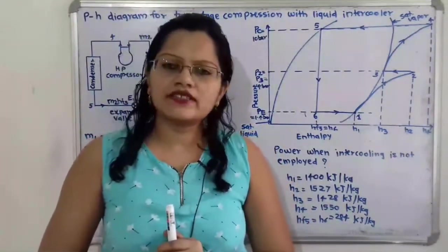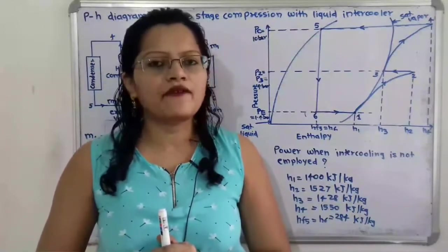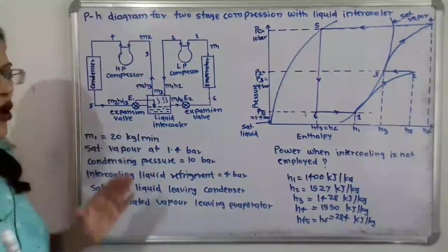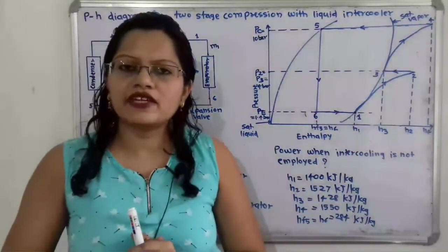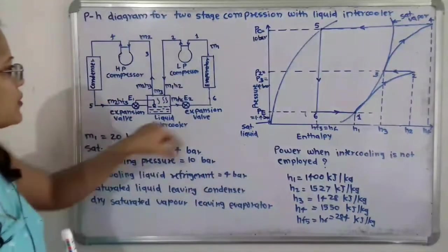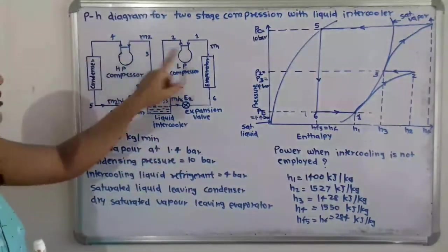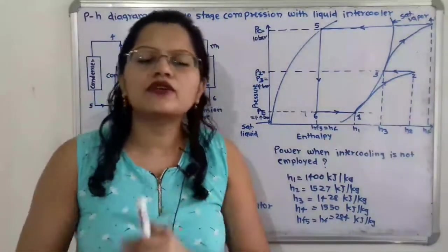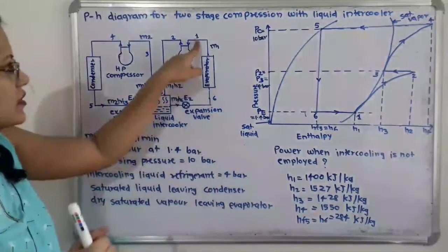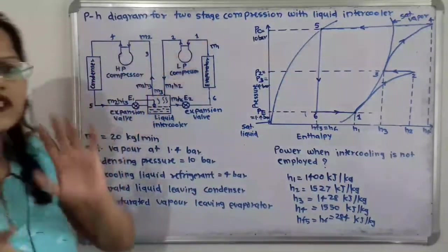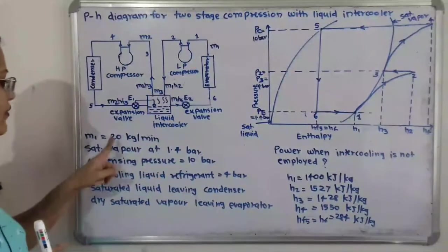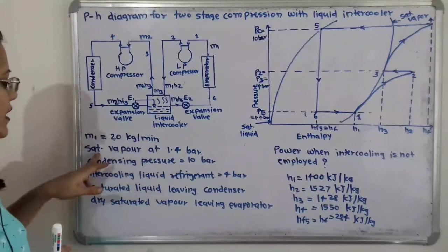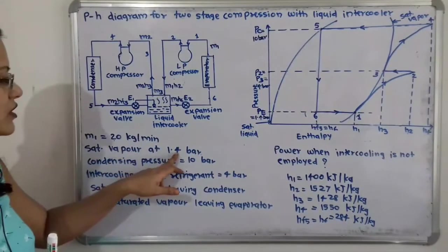Let us first understand the given data and what factors we have to find. If we observe the diagram, there is a low pressure compressor and a high pressure compressor. When the refrigerant is entering the low pressure compressor, that is point 1, the mass m1 is equal to 20 kilograms per minute. At point 1, the refrigerant is at saturated vapor and the pressure is 1.4 bar.